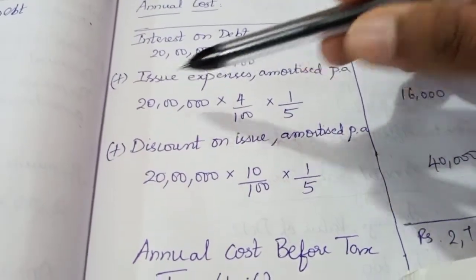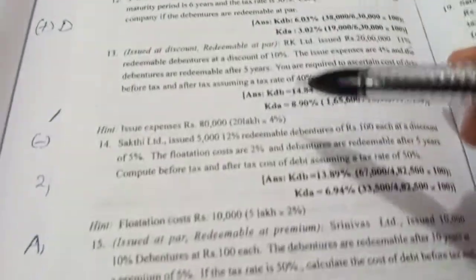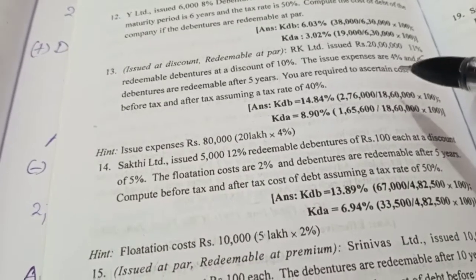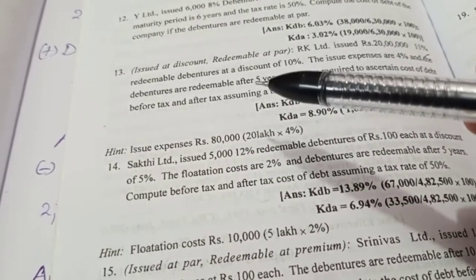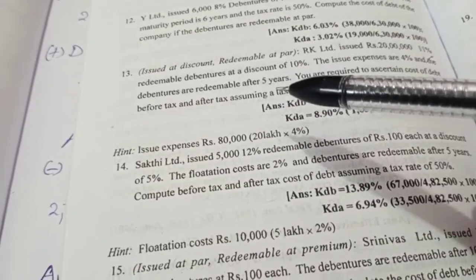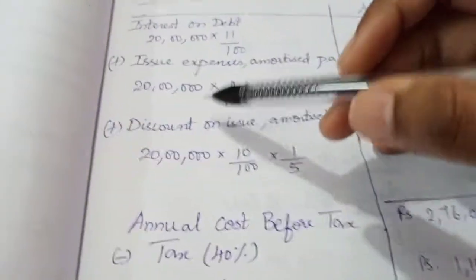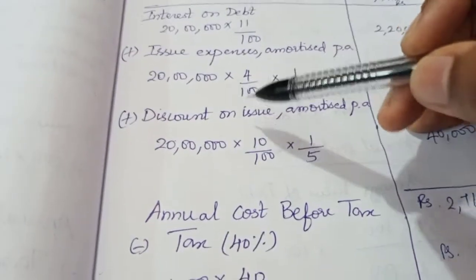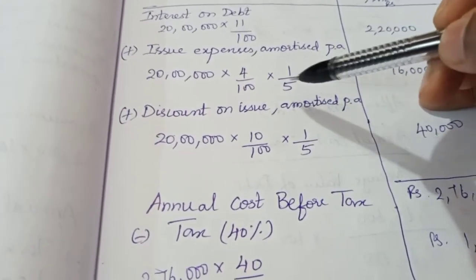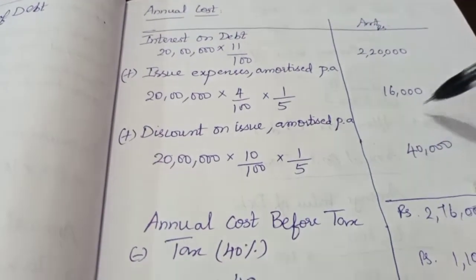Next, we add issue expenses amortized per annum. Issue expenses are 4%, calculated on the face value. The amount of issue expenses amortized per annum over 5 years gives us 16,000.